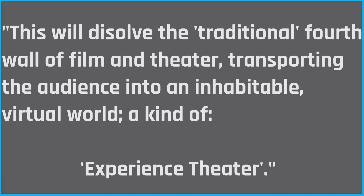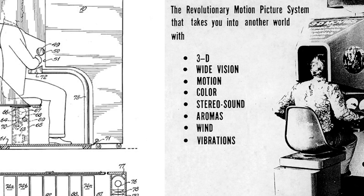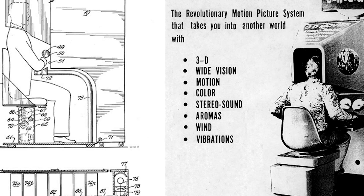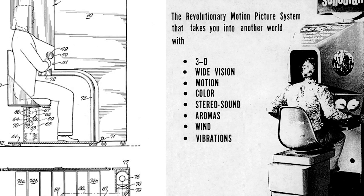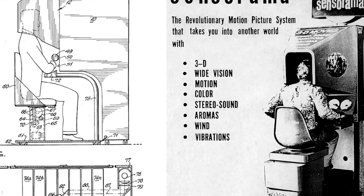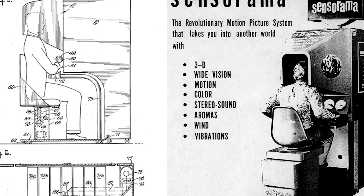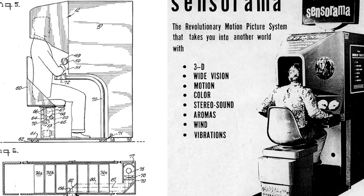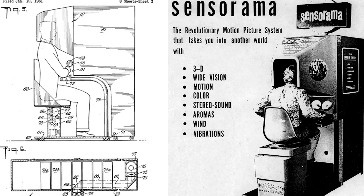He then starts building what he refers to as Sensorama in 1957. It's still lacking a lot of the features that he would add after 1959. And most of Morty's friends think the guy is one short of a full nut bar — he's going on about stuff they can't even imagine as if it were possible.